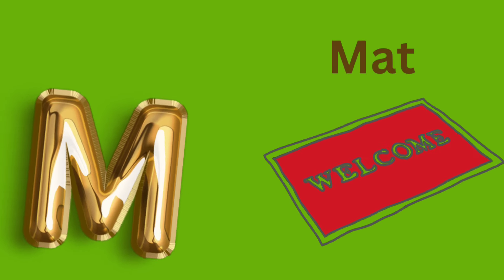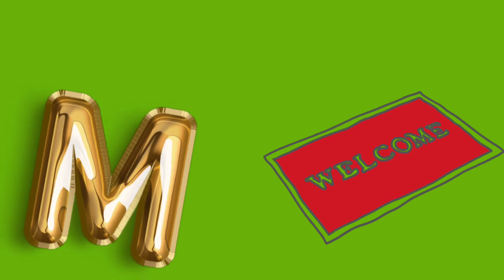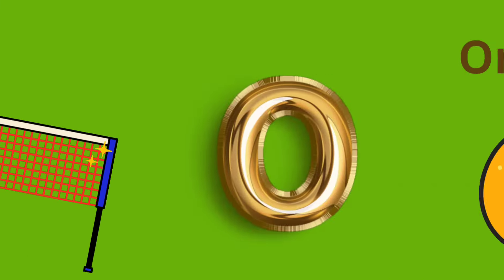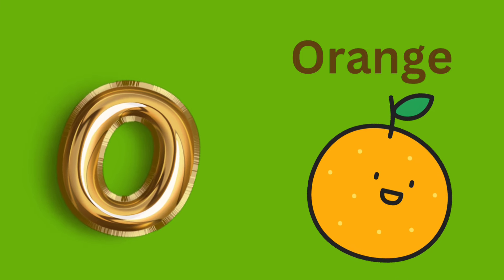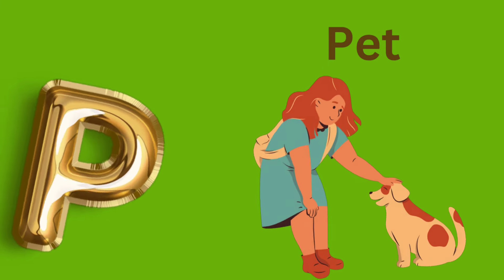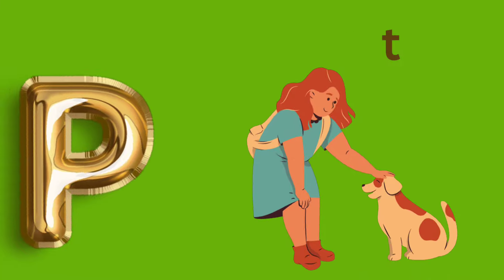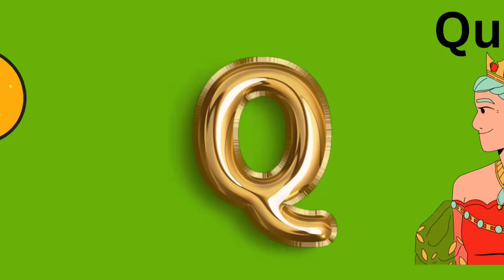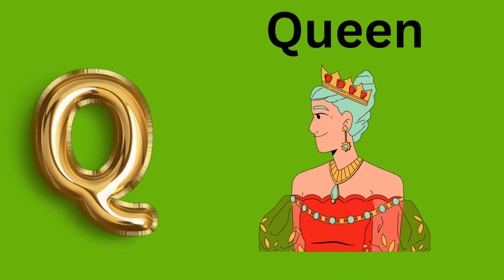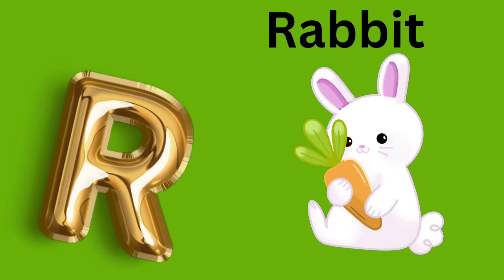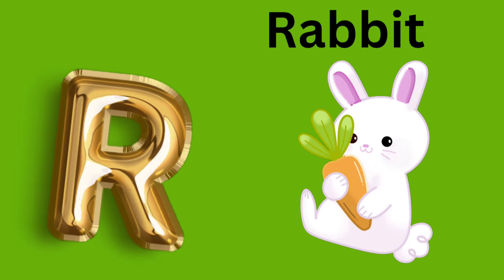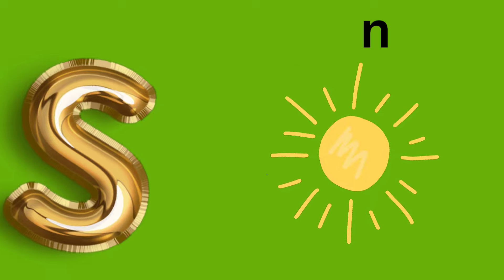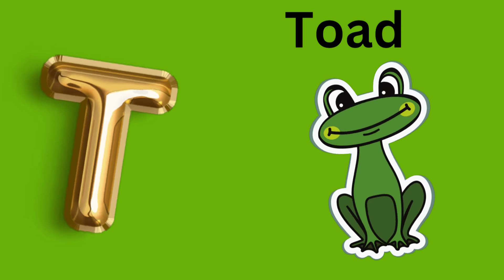M is for Mat, m, m, mat. N is for Net, n, n, net. O is for Orange, o, o, orange. P is for Pet, p, p, pet. Q is for Queen, k, k, queen. R is for Rabbit, r, r, rabbit. S is for Sun, s, s, sun. T is for Toad, t, t, toad.